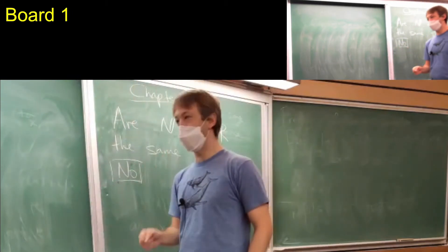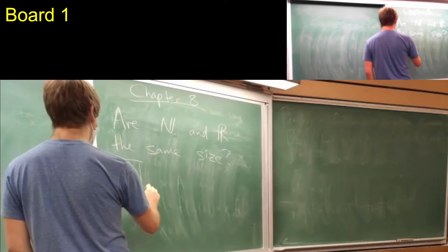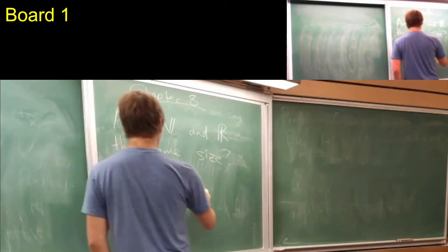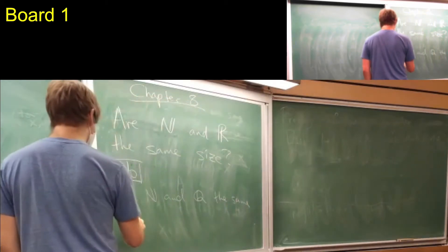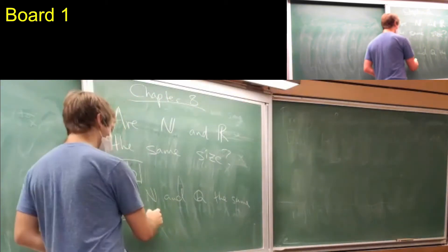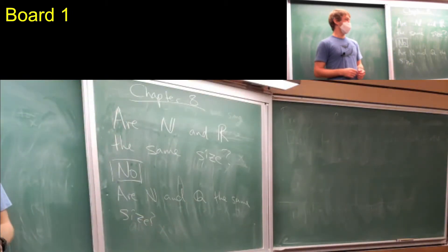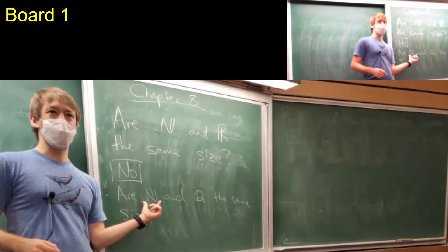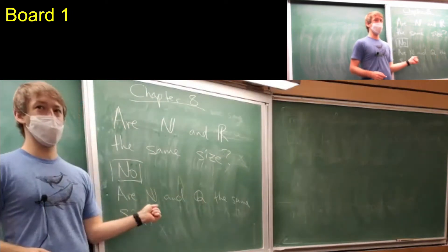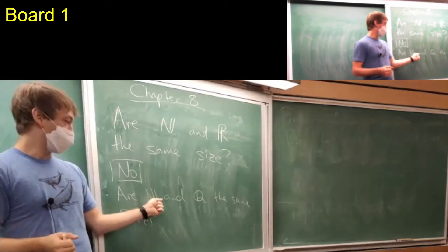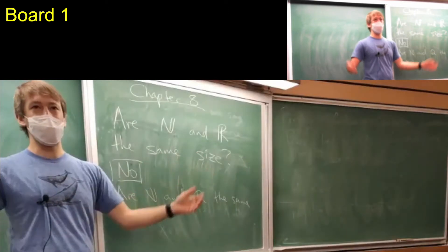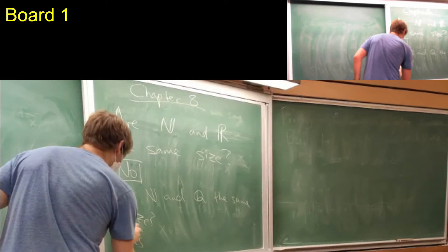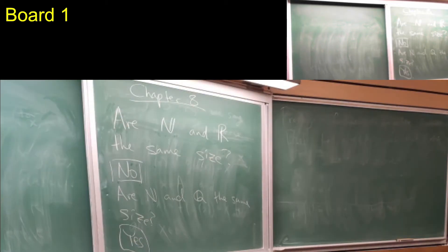To address another natural question: are the naturals and the rationals the same size? The rationals are all the fractions of integers. It might seem they're not the same size either — there are a lot more rationals than naturals. In this case, the answer is going to be yes. The reason the reals are different is because of things like irrational numbers.